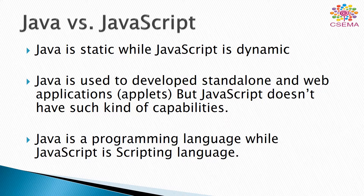Java is a programming language used to develop more secure and powerful programs and applications, while JavaScript is just a scripting language used to capture the user interactions on web pages, and it executes when scripting is enabled on the web browsers.